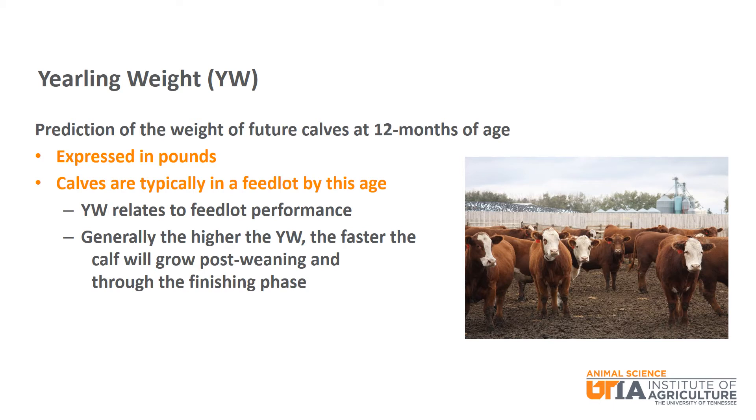Yearling weight is the next EPD and is also expressed in pounds. Yearling weight is a prediction of the weight of future calves at 12 months of age. By this age, calves are typically in the feedlot phase of beef production, so the higher the yearling weight, the faster the calf will grow post-weaning and through the finishing phase.